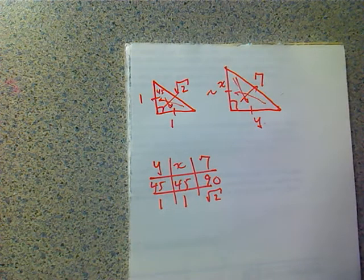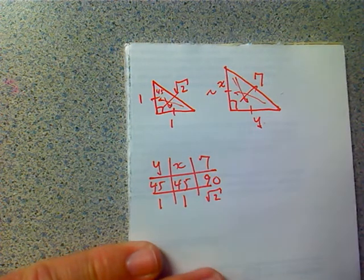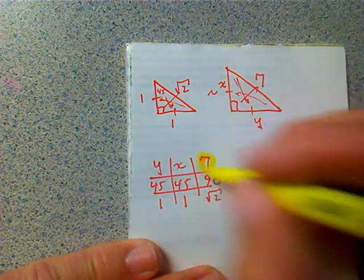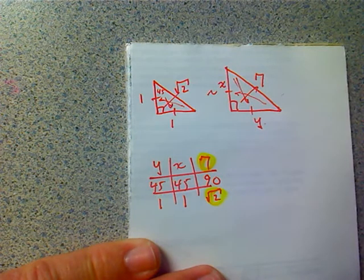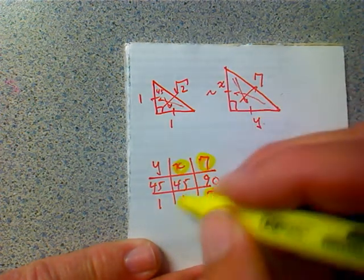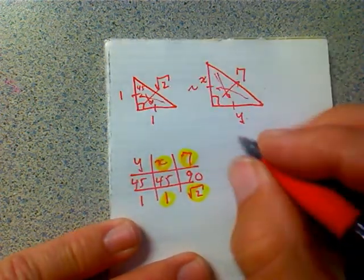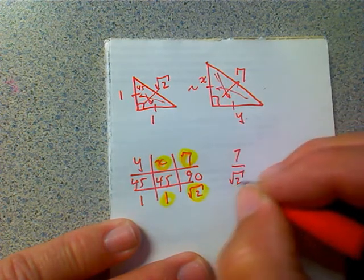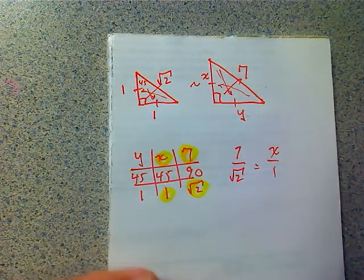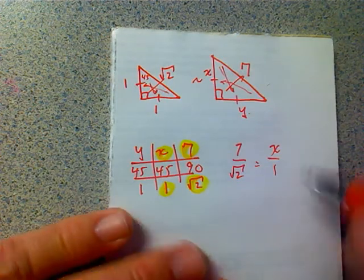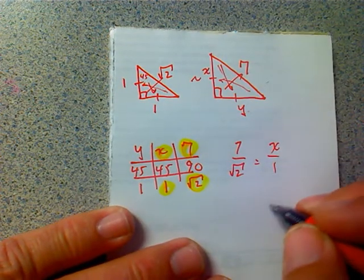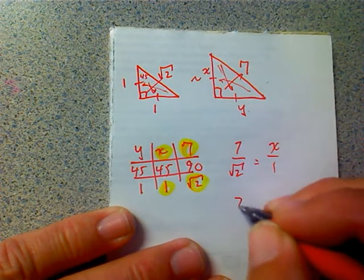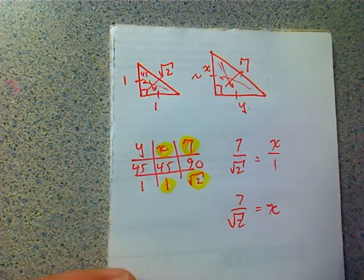Now, I'm going to just use two columns here to set up a proportion. Let's say I'm going to find X first. Well, 7 over the square root of 2 equals X over 1. So my first proportion looks like this. Well, X over 1 is just X, so X must be 7 over the square root of 2.